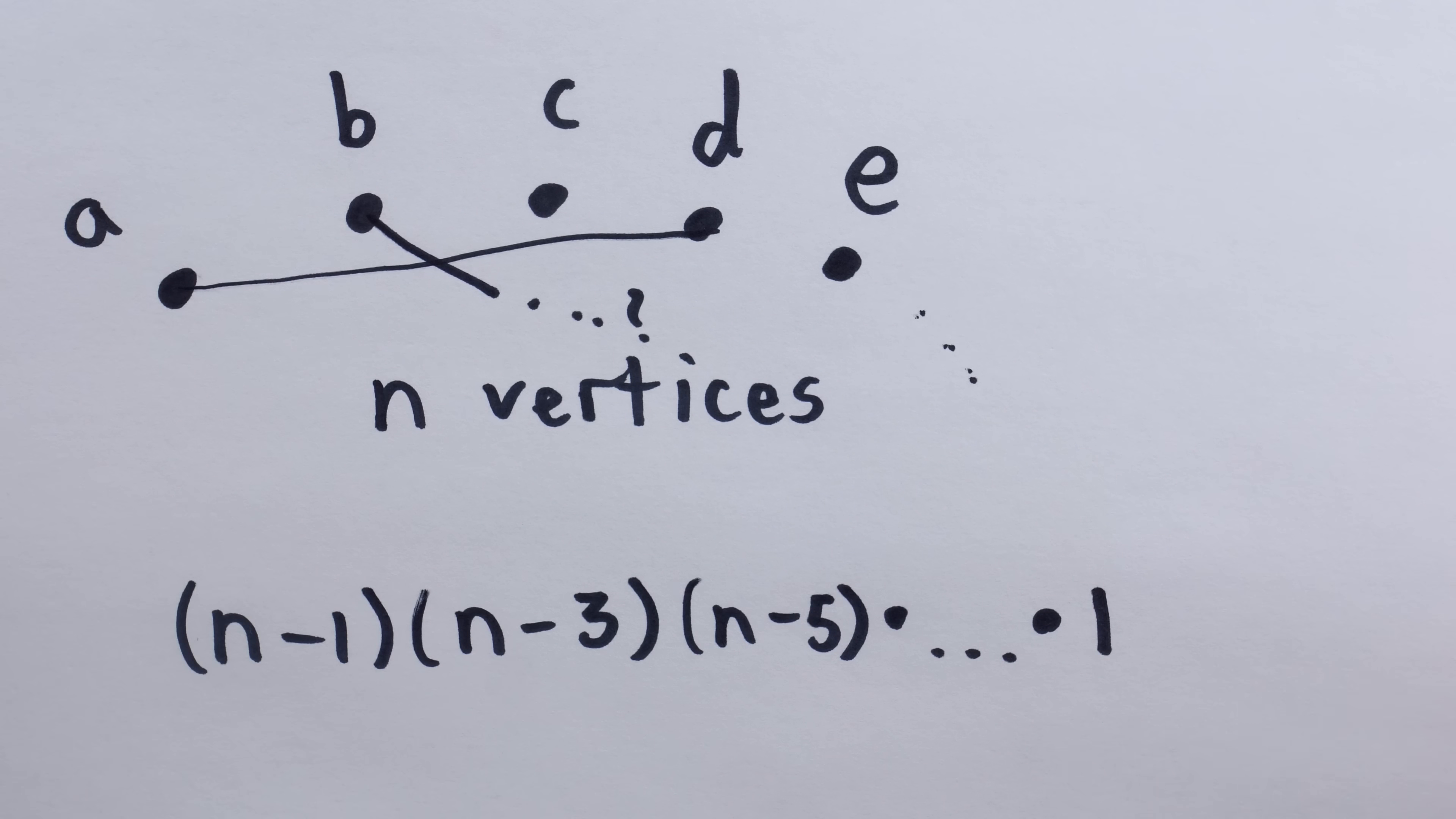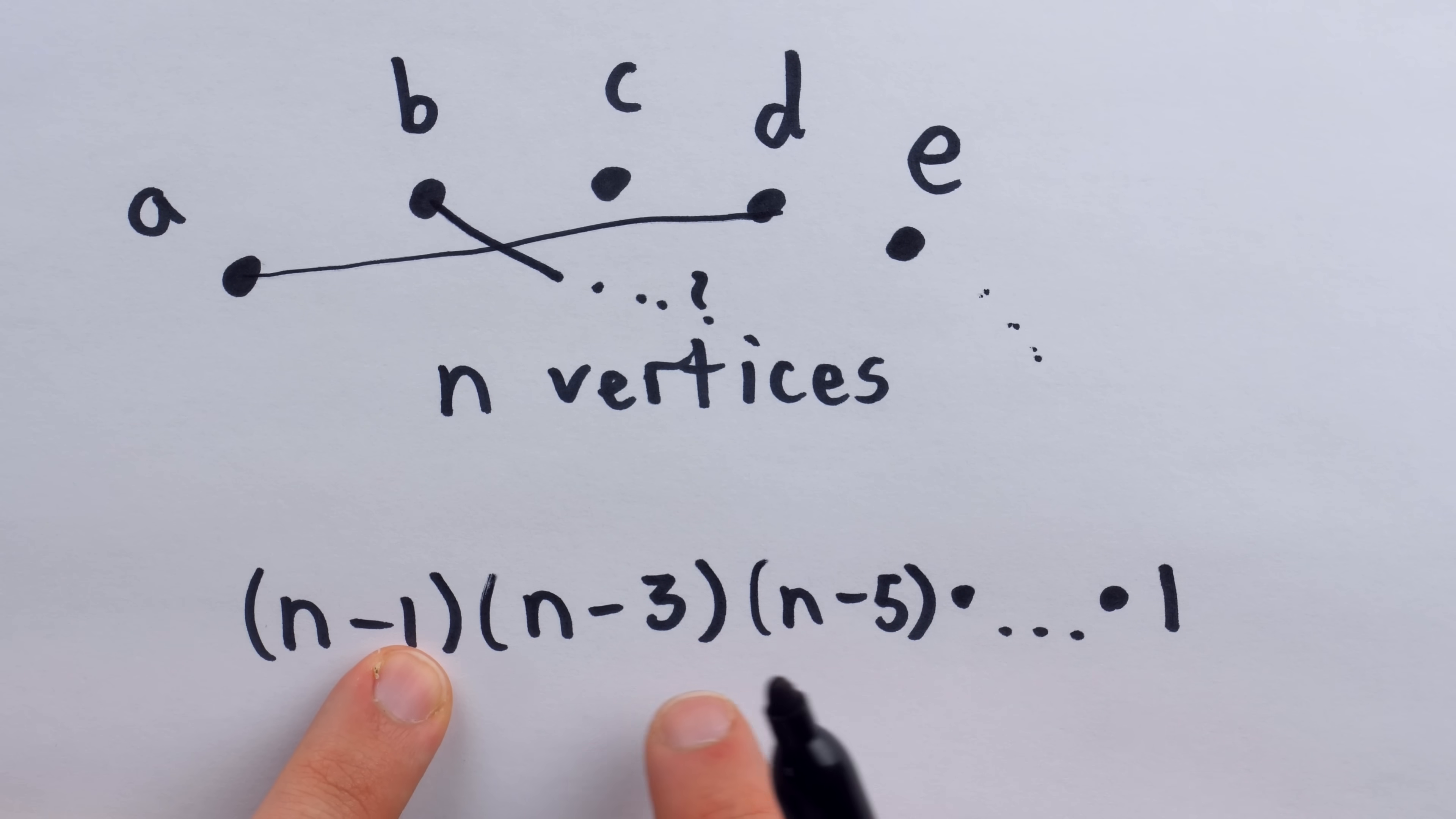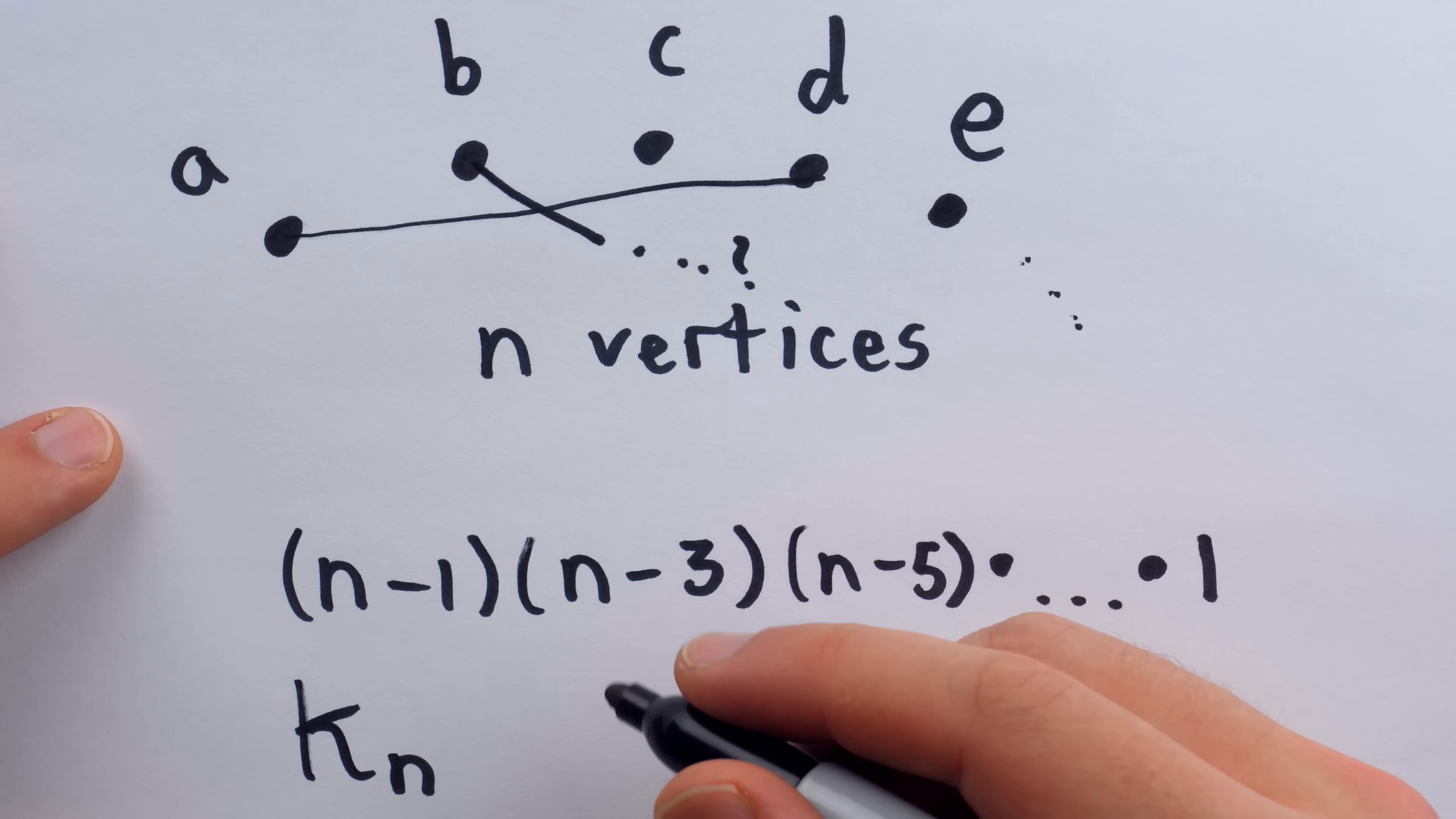Notice how the thing being subtracted from N is going up two in each term, so the parity isn't going to change. In this situation, the first number is odd, and all of the other numbers will be odd as well, because they're just going down two at each step. So how many perfect matchings does the complete graph KN have if N is even? Well, the answer is N minus one double factorial.